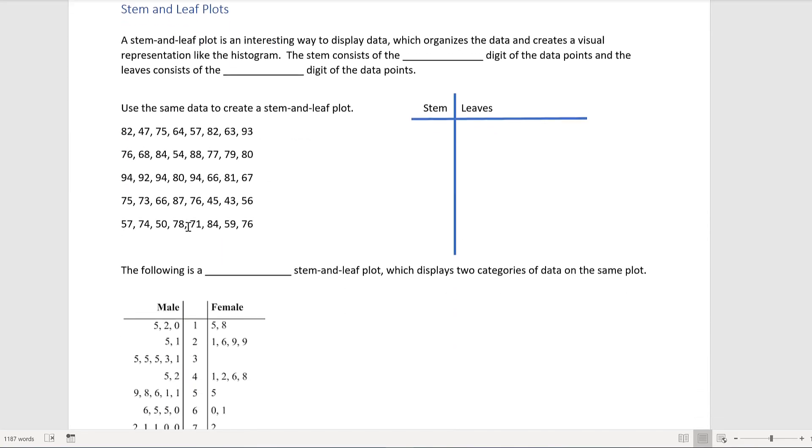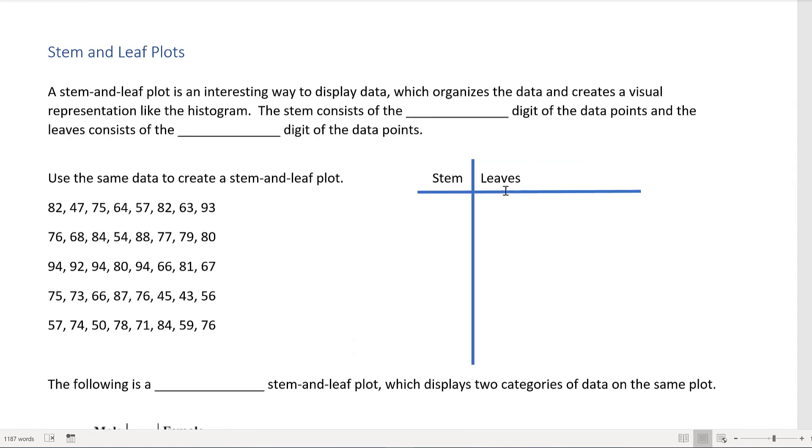Next we're going to talk about stem-and-leaf plots. A stem-and-leaf plot is an interesting way to display data which organizes the data and creates a visual representation kind of like a histogram. The stem part of the stem-and-leaf plot consists of the tens digit of the data points, and the leaves consists of the ones digit. So not all data sets will lend itself to a stem-and-leaf plot, but two-digit data often will. So these are the same 40 points that we had before.